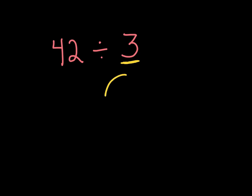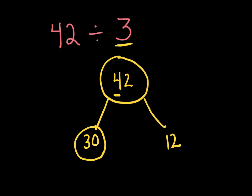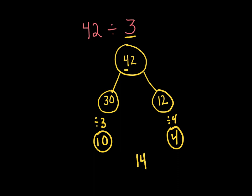If we use our method of number bonds and put 42 here, we want to break up 42 where 3 can go into it. 3 can't go into 40, but it can go into 30 — that's the closest we can get. 42 minus 30 gives us 12. So we check if 3 goes into 30: 30 divided by 3 is 10, and 12 divided by 3 is 4. So the answer is 14. Yes, 3 is a factor of 42.